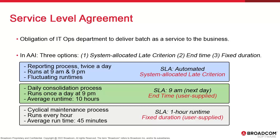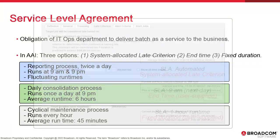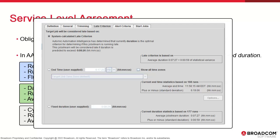Know this: every time you see the notion of a late job stream throughout AAI's interface — whether it's in monitoring or the alerts — the definition of late is based on the SLA. SLA options are found in the late criterion tab of every job stream, and the features are always enabled. All job streams have an SLA number, whether we make use of it or not.